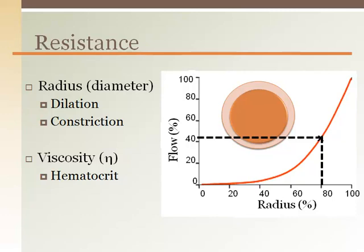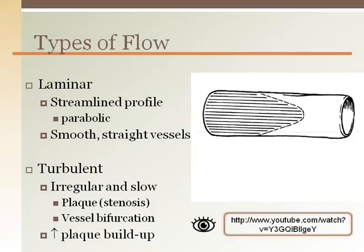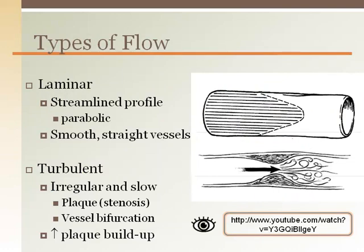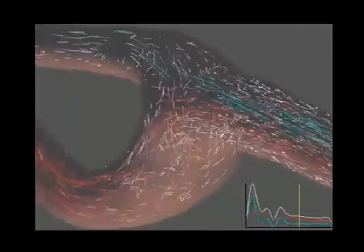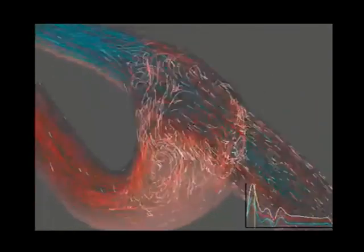Viscosity of blood can affect resistance when a person has too many red blood cells — called polycythemia — which can occur at high altitude or with certain pharmacological agents, making blood thicker and harder to move. Blood flow through vessels can be laminar (streamlined, like a bullet) or turbulent. Turbulence is created whenever there is a change from a straight pipe, such as when a vessel bifurcates. Pathologically, plaque buildup on the vessel wall creates turbulence, which further contributes to more plaque buildup. The turbulence created by vessel bifurcation can be seen in this video.